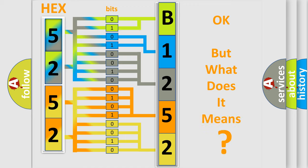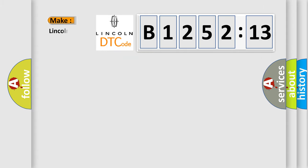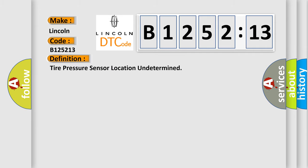The number itself does not make sense to us if we cannot assign information about what it actually expresses. So, what does the diagnostic trouble code B125213 interpret specifically for Lincoln car manufacturers?